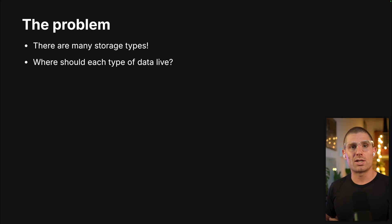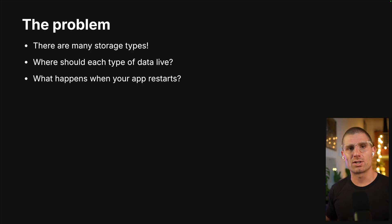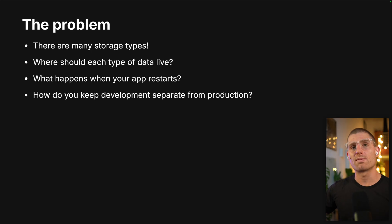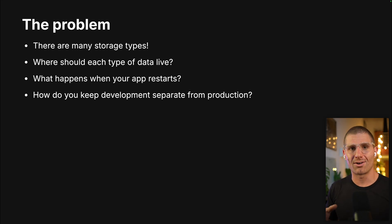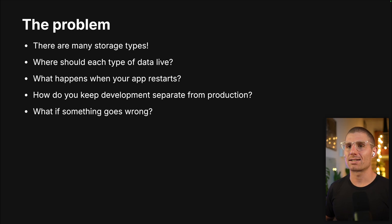We don't really know where each type of data should live. What happens if our app starts, or we lose that data, or it crashes, or we make a mistake? How do we keep our development environment separate from what our users see? That's another really big question that's been thrown around a lot in the era of vibe coding. Ultimately, what if something goes wrong? These are all questions that we're asking ourselves.